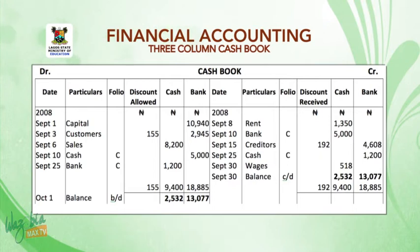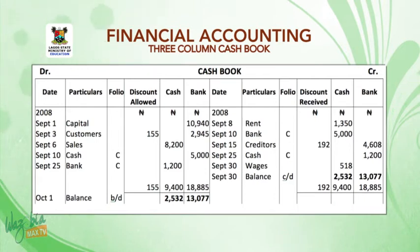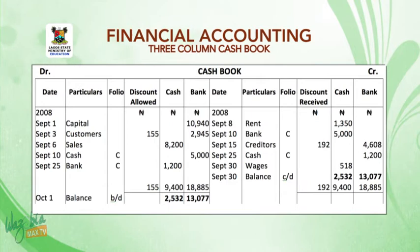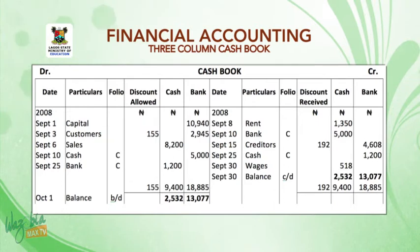On September 1, we started business with cash at bank — you debit capital, entering $10,940 under the bank column. On September 3, you received a check from the customer less 5%, as calculated earlier. Under particulars you write 'customers', under discount allowed you write $155, and under bank you write $2,945. Then September 6, cash sales of $8,200 — you receive money, so under the debit side particulars you write 'sales', and under cash you write $8,200.